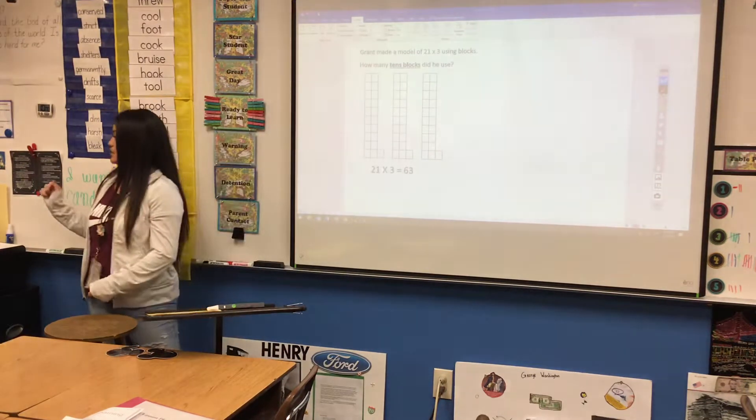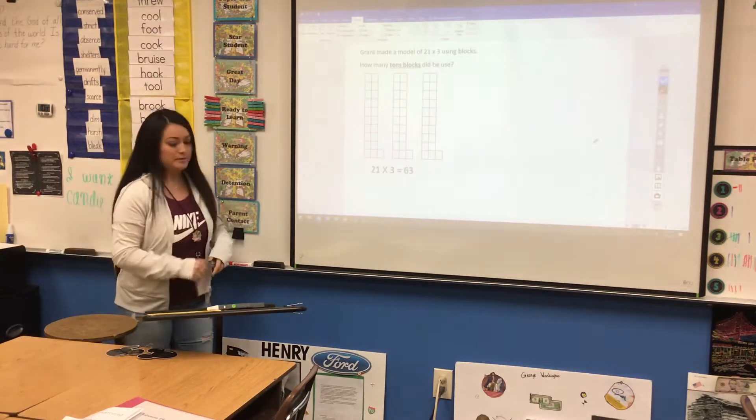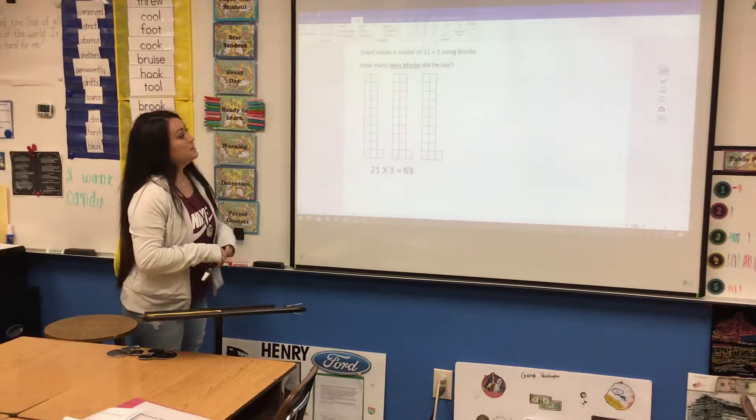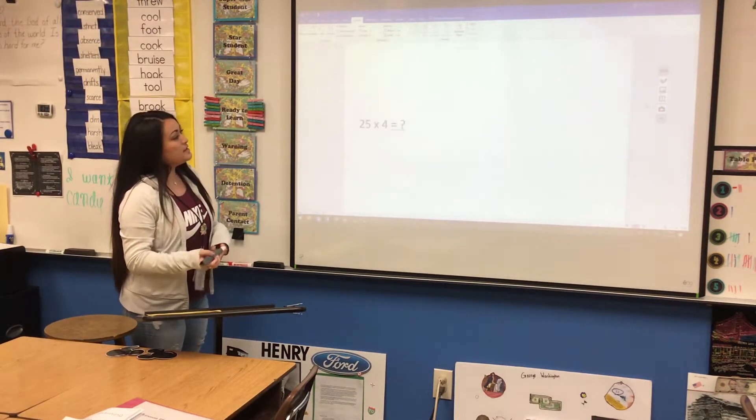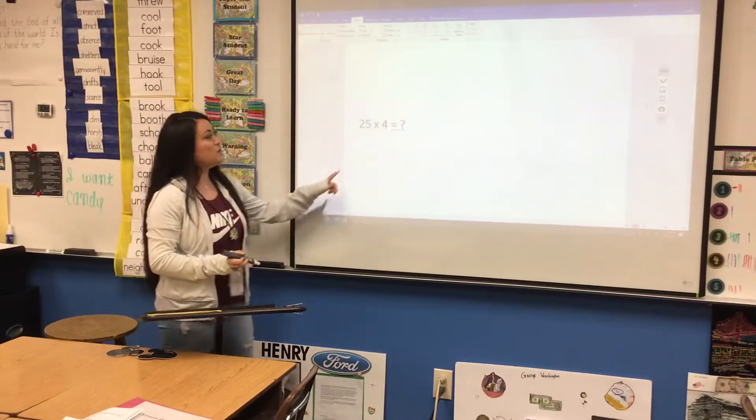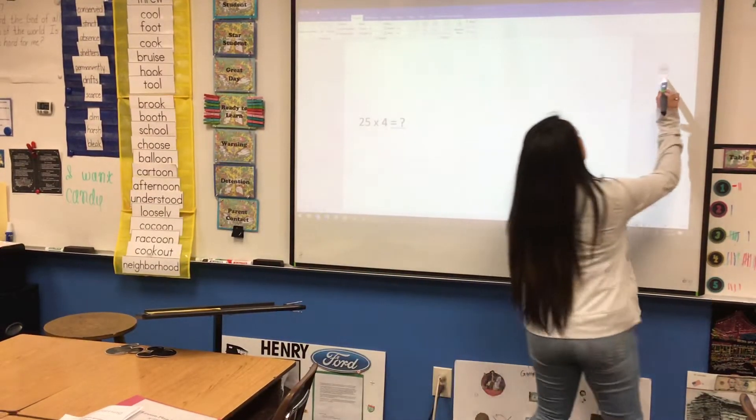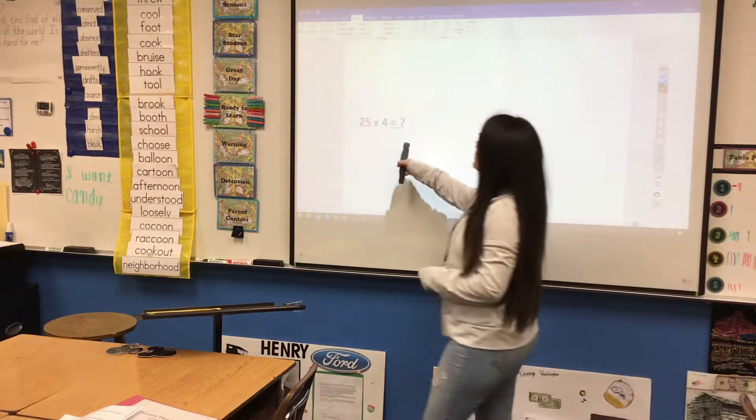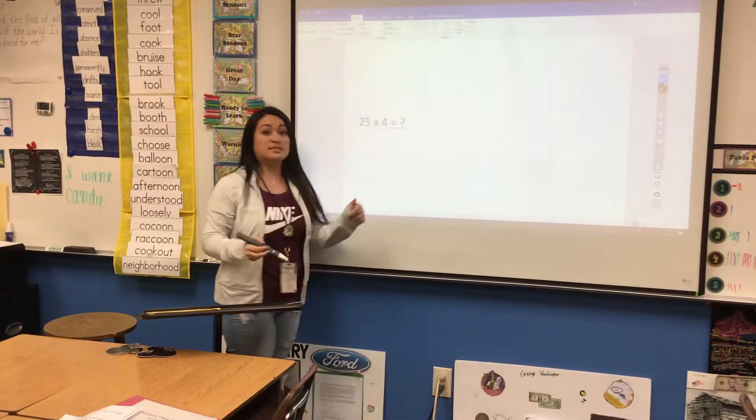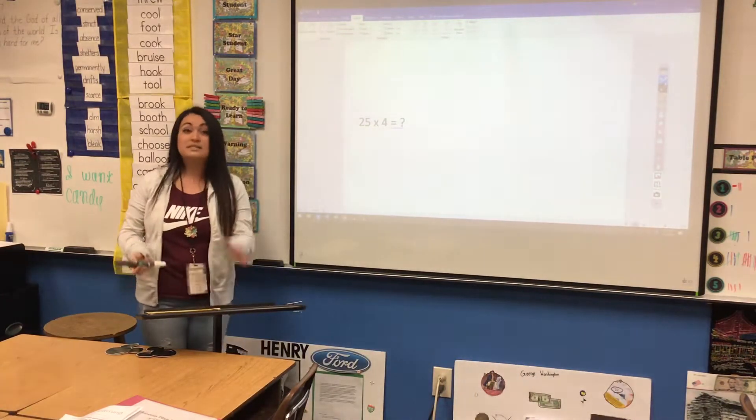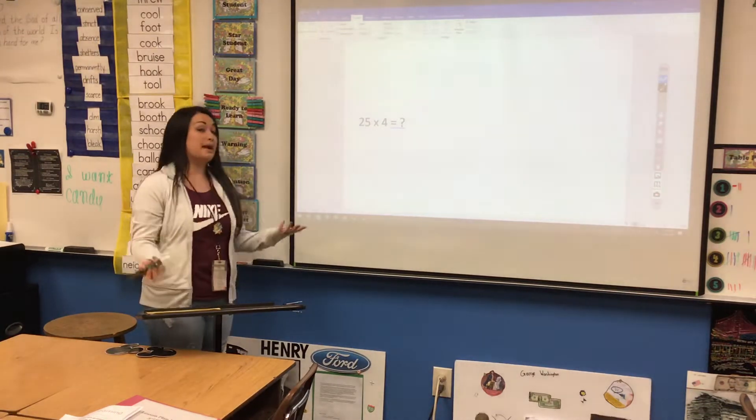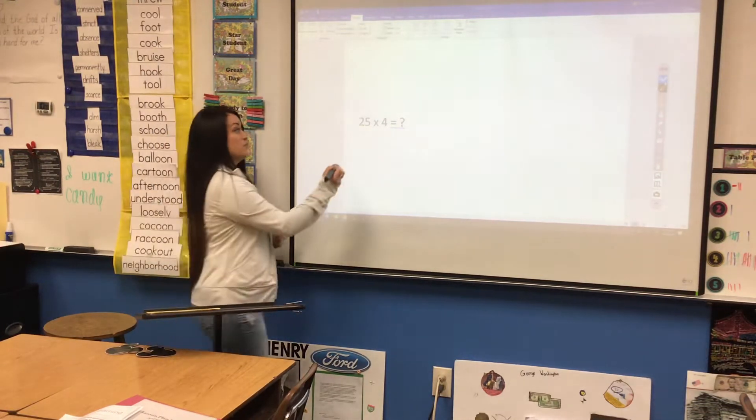If you wouldn't mind scrolling down, we're going to go to the second one. I'm going to use my annotator for this. So if the question is 21 times 4, the first thing we're going to do is make sure our problem is stacked. On your practice test, it might already be stacked for you. It might not. I'm just going to walk you through if it's not.